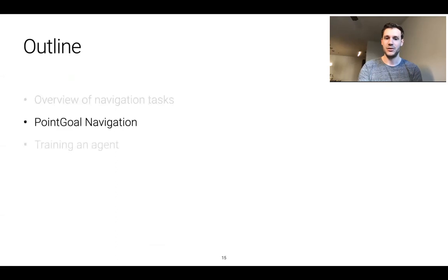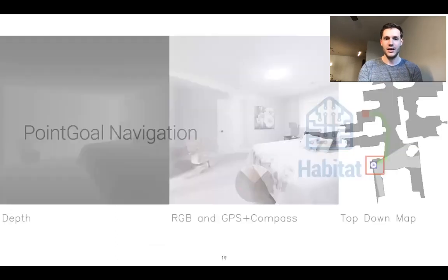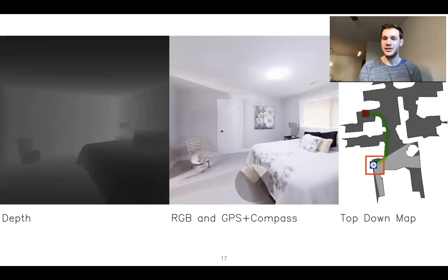And now we'll dive into the task of point goal navigation. In point goal navigation an agent is initialized in a novel unseen environment and tasked with navigating to a point specified relative to its initial location. Note that the top-down map shown on the right here is solely for visualization purposes. The agent does not have access to this.